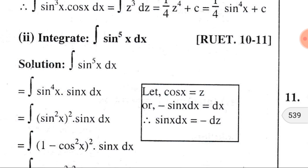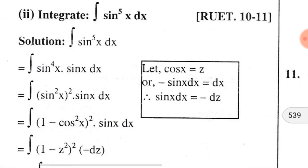Problem number seven: ∫sin⁵x dx. This sin⁵x dx can be written as sin⁴x · sinx dx.